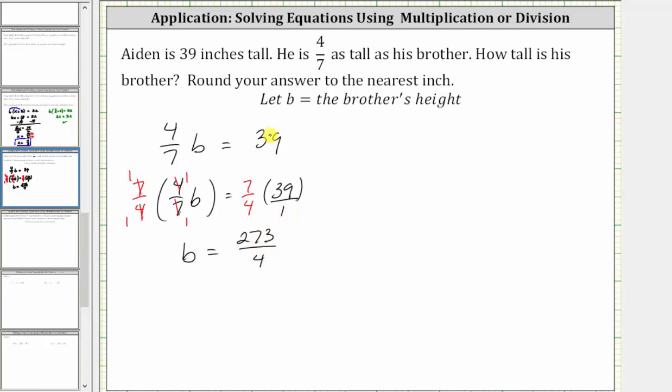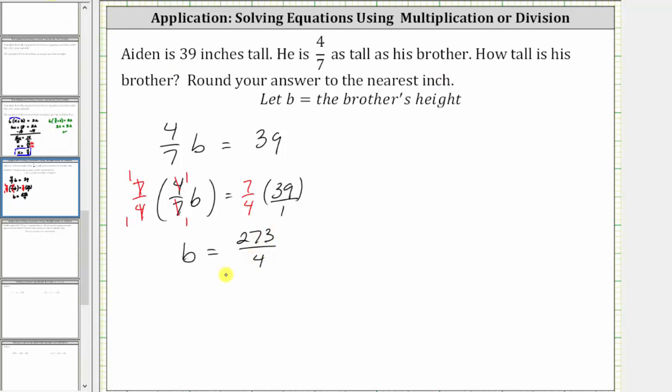And now because we're told to round to the nearest inch, we need to determine this quotient. And let's show this on the side. We begin by determining how many fours in 27, which is six. Six times four is 24. We subtract, the difference is three. Bring down the next digit.